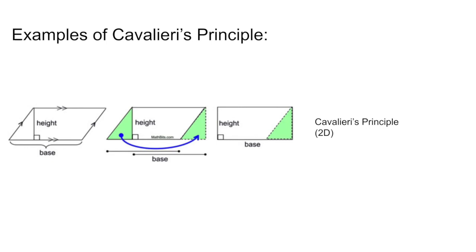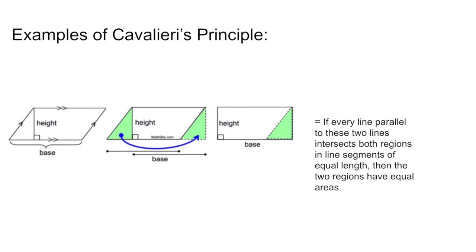This example is for 2D Cavalieri's Principle. In 2D, if every line parallel to these two lines intersects both regions in line segments of equal length, then the two regions have equal areas.